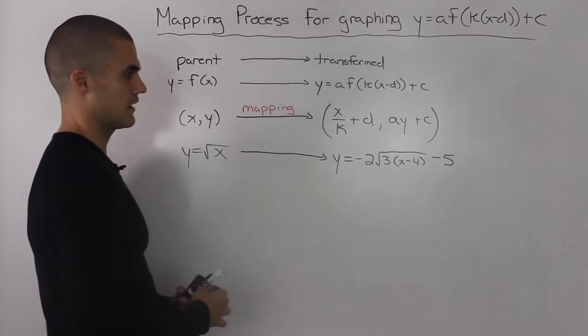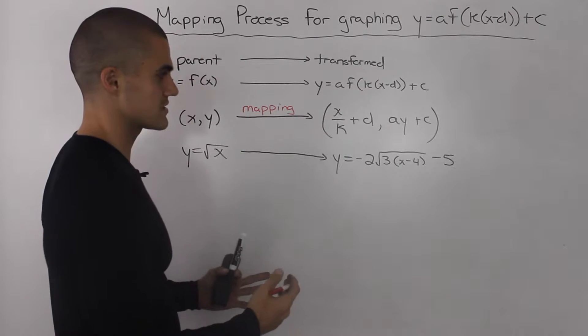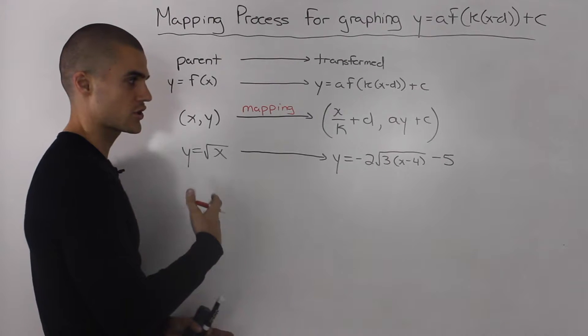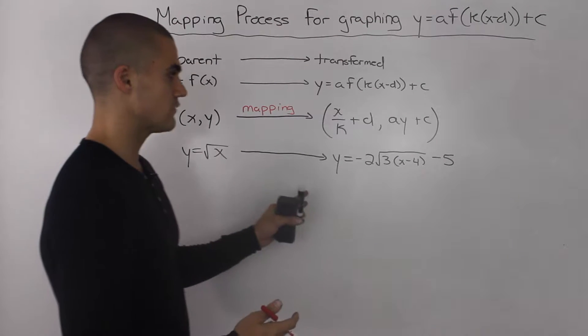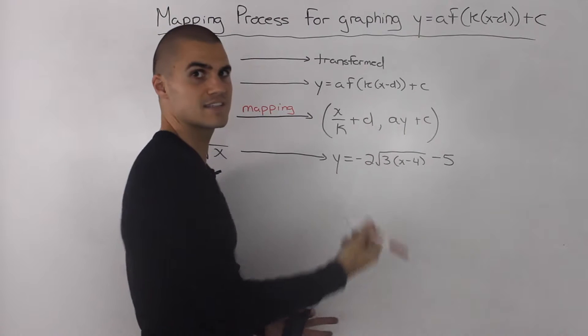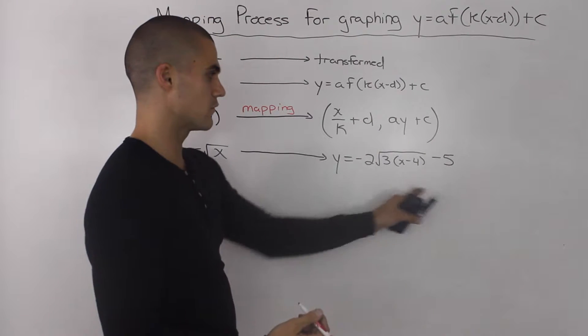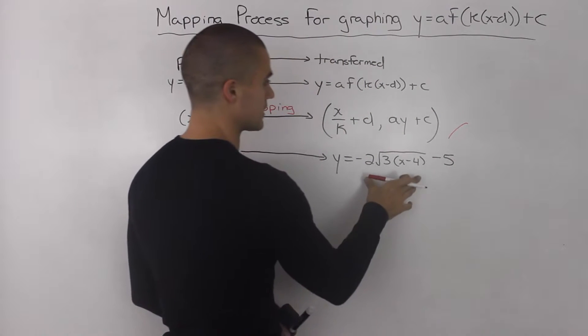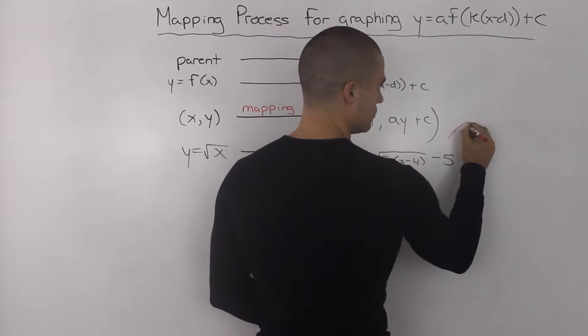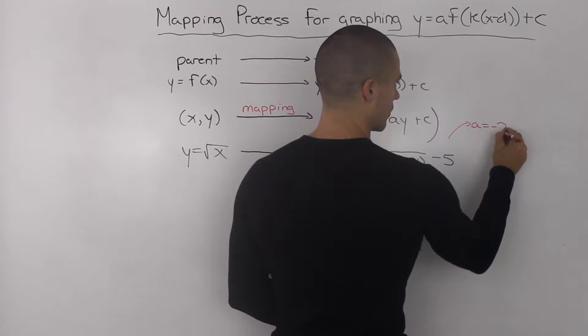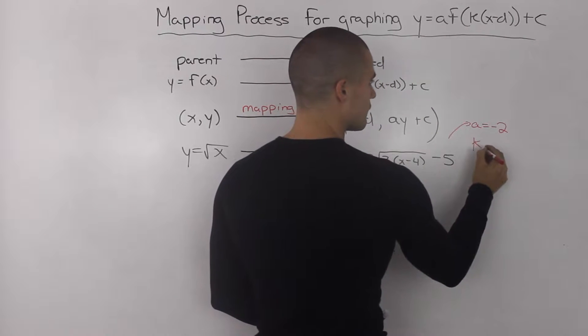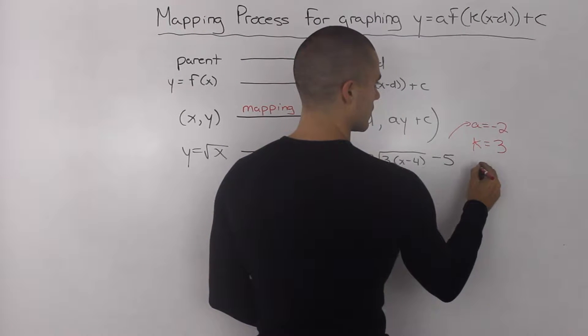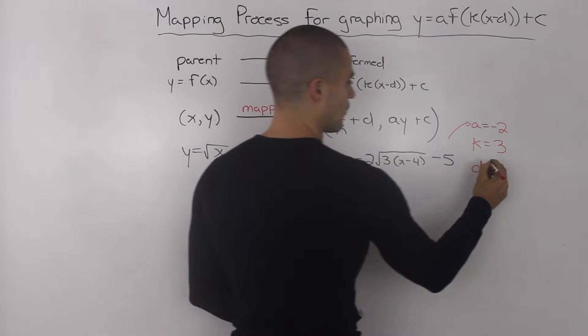The next step in the graphing process is figuring out what transformations the parent function underwent. You have to figure out what your a, k, d, and c values are. From looking at this function, we should be able to figure it out pretty easily. The a value is negative 2, the k value is positive 3, the d value is positive 4, and the c value is negative 5.